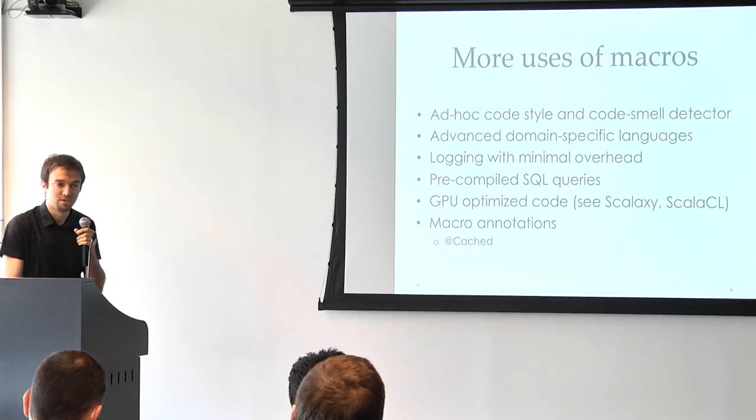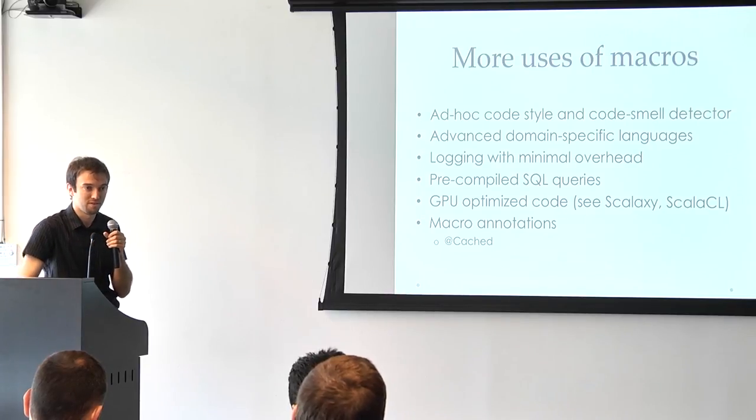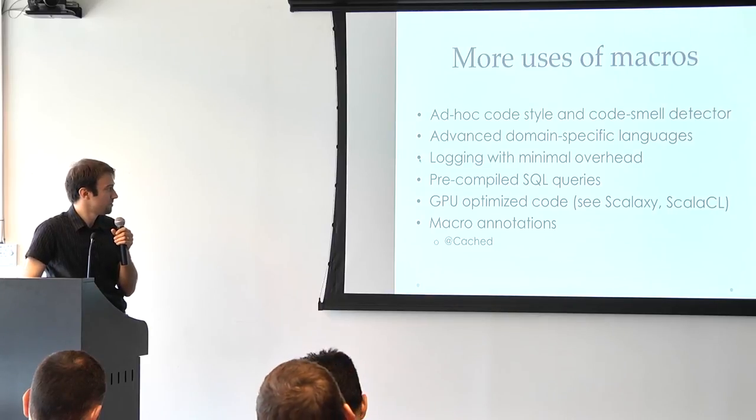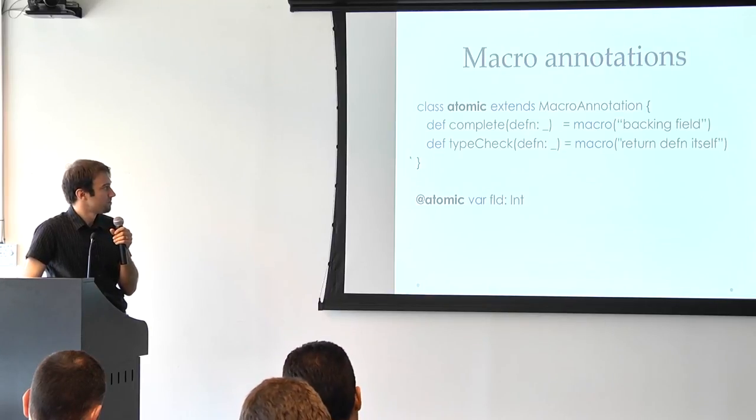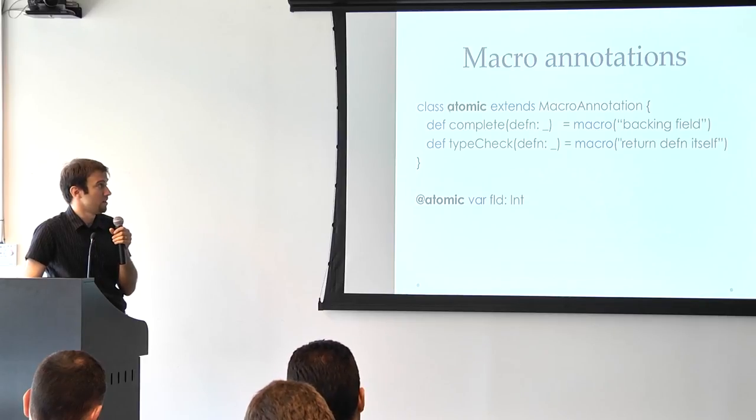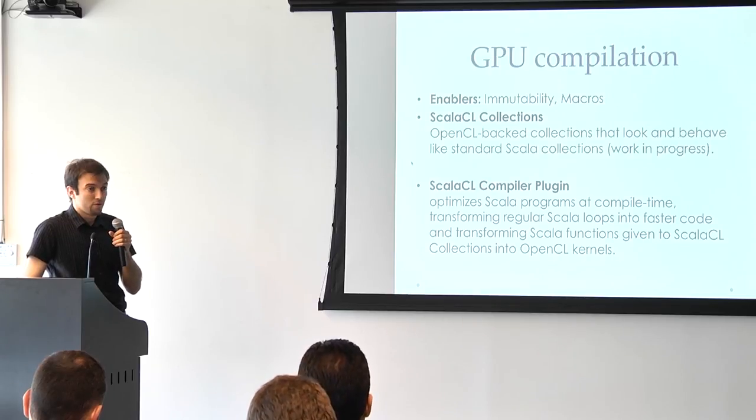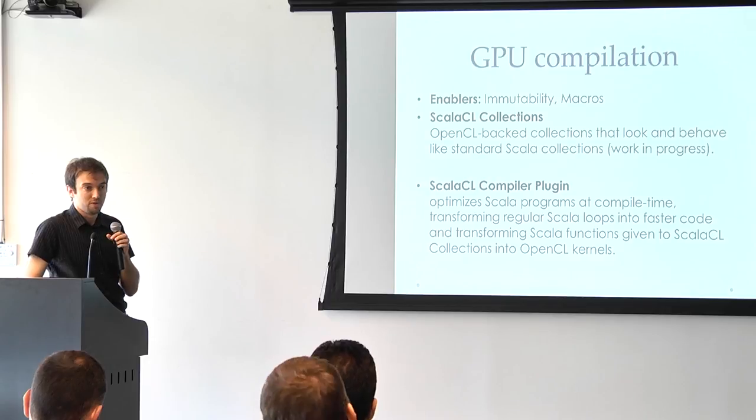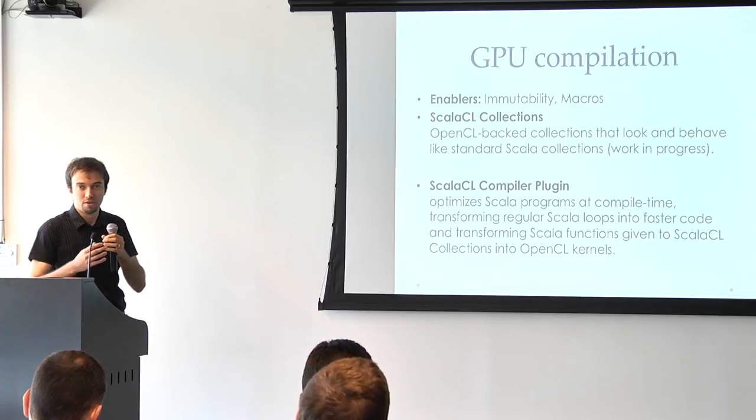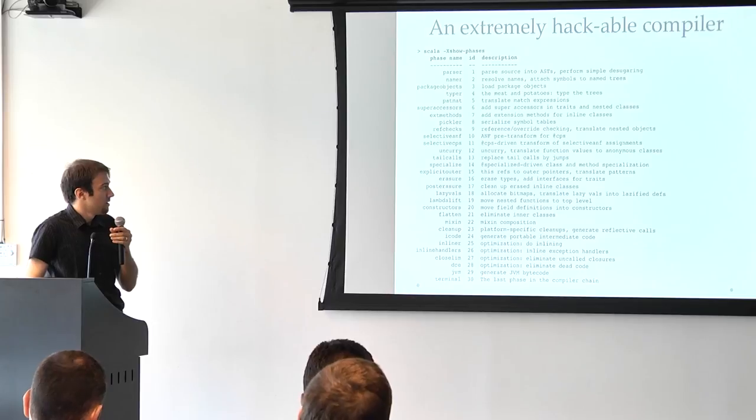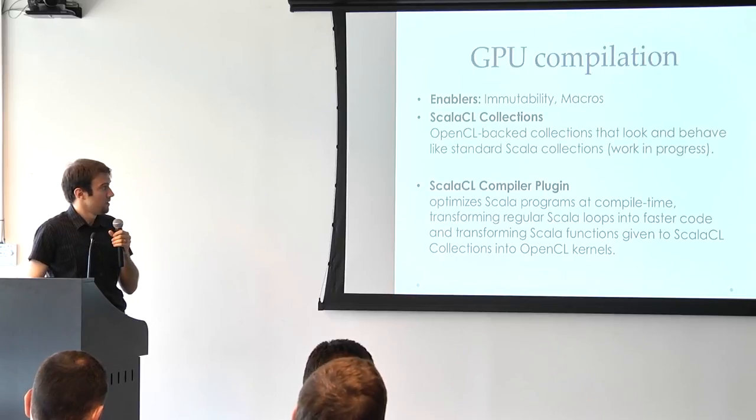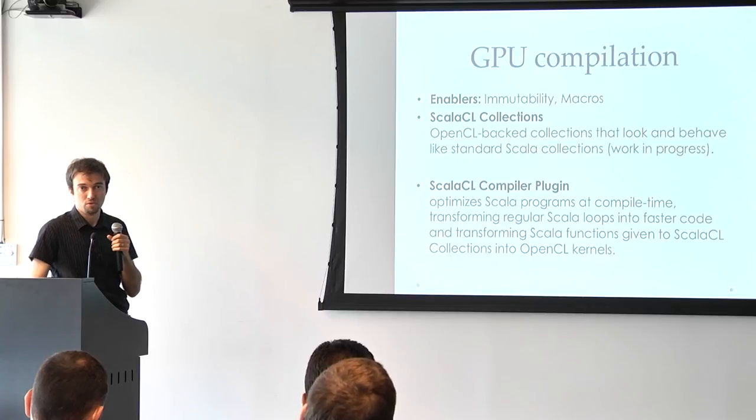So macro annotations are something that Eugene is going to cover. And this is something that the community really wants in this stage. So it's probably on the roadmap. So in this case, you can just add an atomic macro annotation. That's one example. Or a cached macro annotation. You can also compile code to the GPU using macros because you can do everything since you can write your own code. And a good library would be Scalaxy. This is a library that allows you to extend collections and also compile to the GPU.